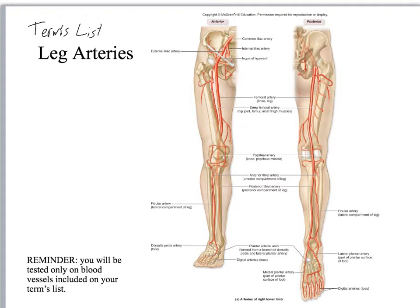With your arterial system you've got the aorta coming down, and that's going to split into your common iliac, which then splits into your internal iliac and your external iliac. There is a canal called the inguinal canal, and the whole structure is created by the inguinal ligament, running between the ASIS — anterior superior iliac spine — and the pubis. All three words need to be used in each name: common iliac, internal iliac, and external iliac.